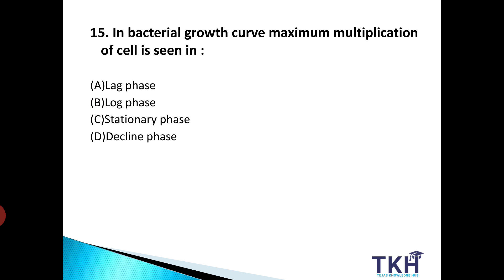Next, 15th question: in the bacterial growth curve, maximum multiplication of cells is seen in — bacterial growth curve में जो maximum bacterial cell की multiplication होती है, वो किस phase में दिखाई देती है? Option A: Lag phase. Option B: Log phase. Option C: Stationary phase. Option D: Decline phase.